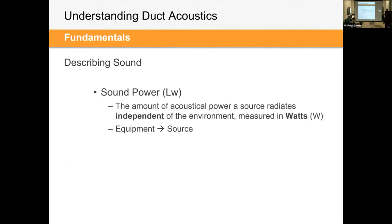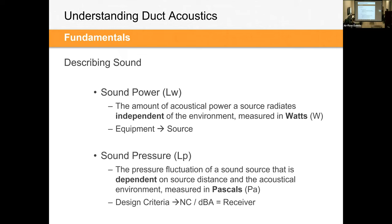There's an important difference between sound power and sound pressure. Sound power, denoted LW, is the amount of acoustical energy independent of environment — it stays the same regardless of where the device is located. Sound pressure, denoted LP, is very dependent on environment: where you're located, how far away you are, and whether you're indoors or outdoors.